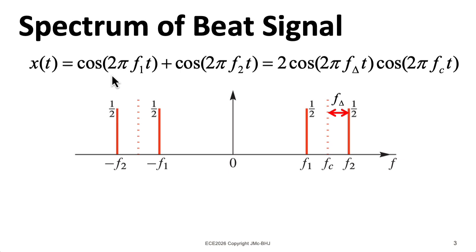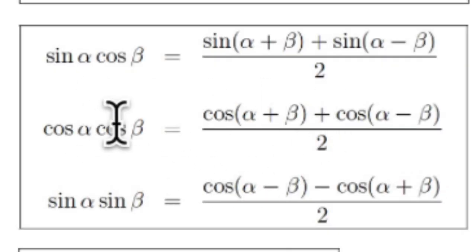We have this trig identity that says that if you add the cosines of two different frequencies, that's equivalent to multiplying the cosine of the average of the frequencies multiplied by cosine with the frequency of the difference of the original frequencies divided by two, all times two. That's a consequence of this identity: cosine alpha times cosine beta equals cosine alpha plus beta plus cosine alpha minus beta, all divided by two.